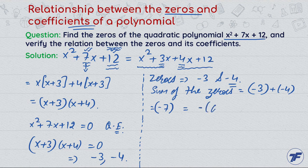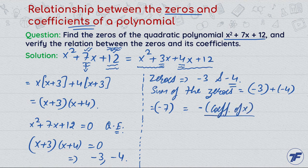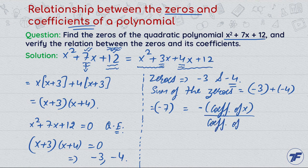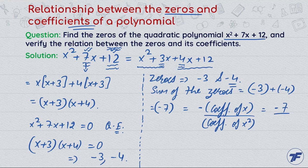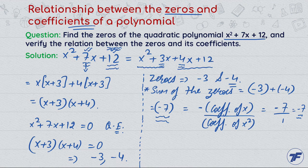Minus times the coefficient of x divided by the coefficient of x². Which again is coming as -7. This means sum of the zeros equals the formula value, so we have verified.